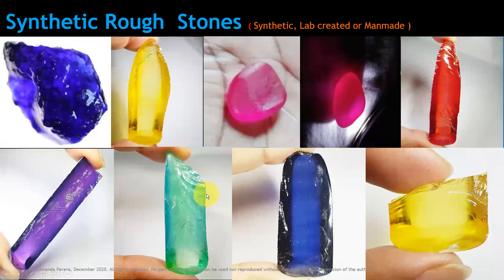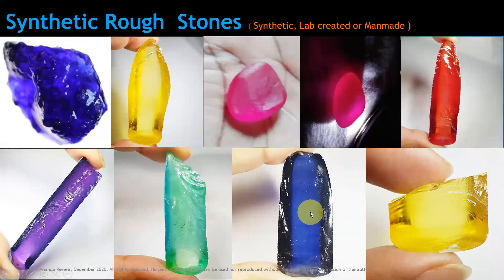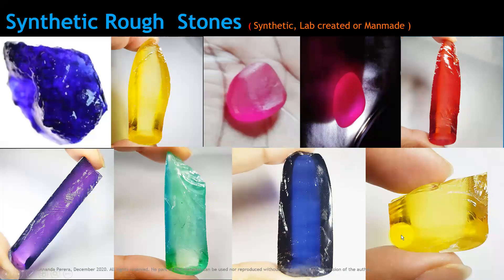These are synthetic stones — synthetic blue, synthetic yellow, synthetic ruby. See the brightness and red color. Purple, green, blue. Look at the six sides — hexagonal shape, crystal shape also there. All are man-made, lab-created, synthetic, or artificial.